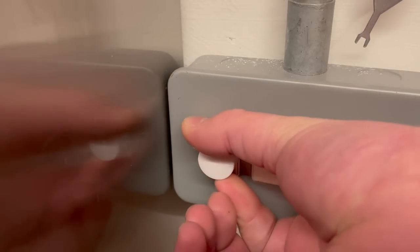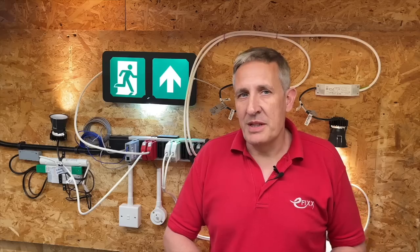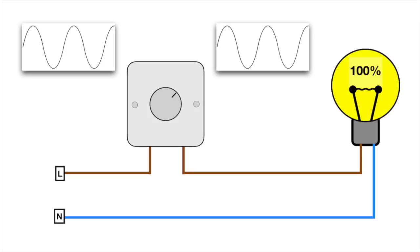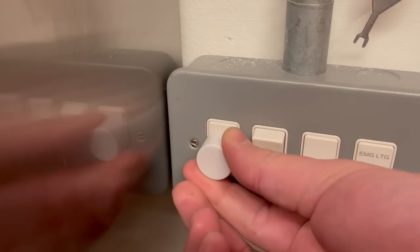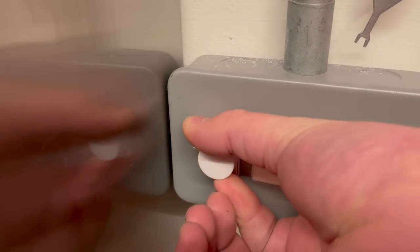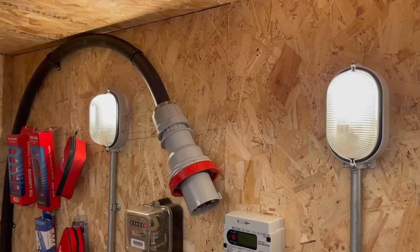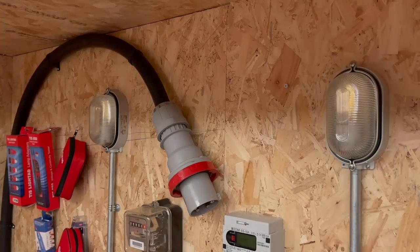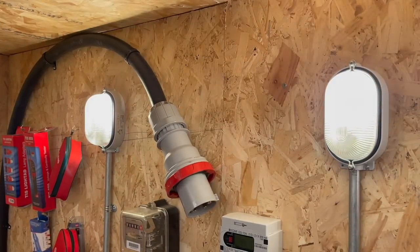When we used incandescent and halogen lamps, dimming was easy. We connect a dimmer in series with the power supply to a lamp and chop the AC waveform to effectively reduce the amount of power flowing into the lamp, which in turn reduces its light output. However, historically it was almost impossible to dim fluorescent and discharge lamps using a traditional dimmer switch.